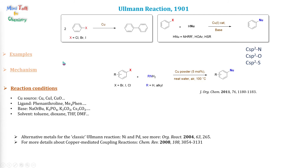The low cost and low toxicity of copper make Ullmann-type reactions appealing, but usually the classic Ullmann reaction requires stoichiometric amounts of copper, harsh reaction conditions, strong base, and polar organic solvent.